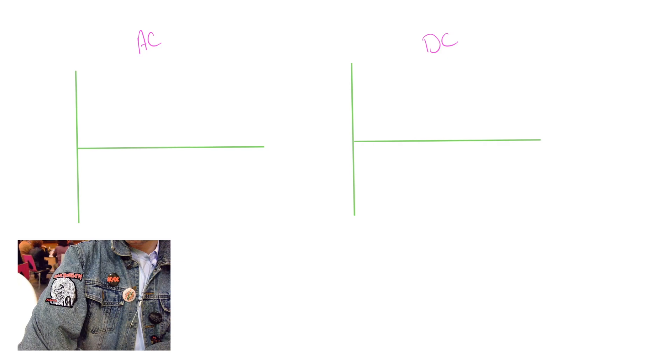AC, DC here is not a musical reference, but it is types of current. Alternating current and direct current. Alternating current goes one way or it goes the other way. It changes. Direct current just goes one way. Alternating current is what you're going to get out of your mains electricity, whereas direct current comes from batteries.